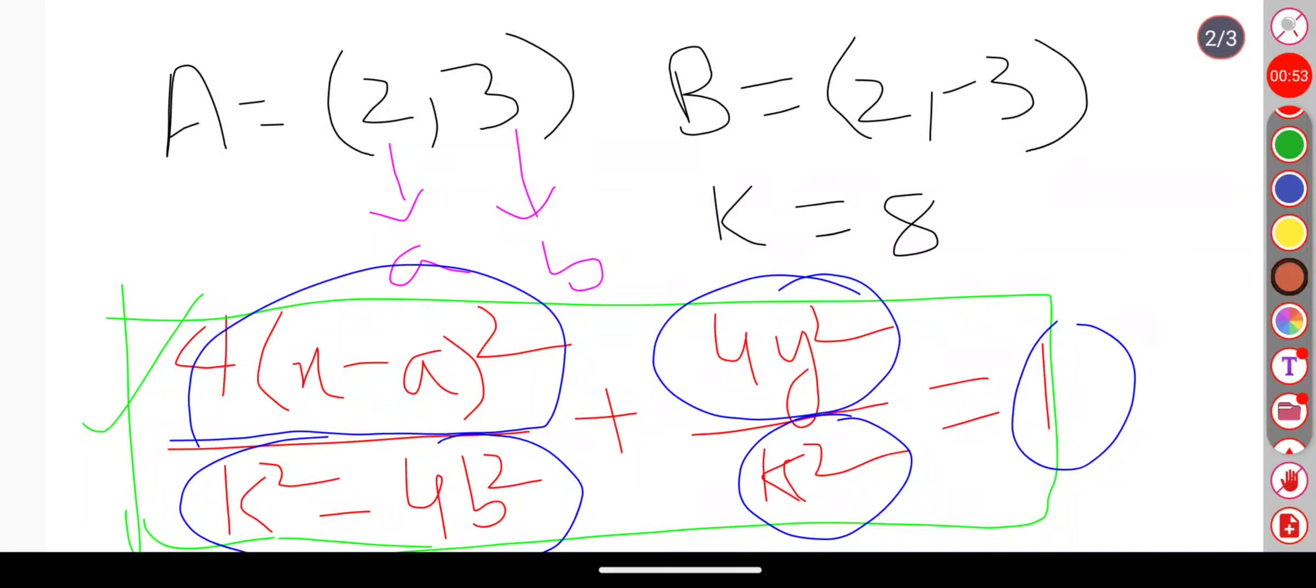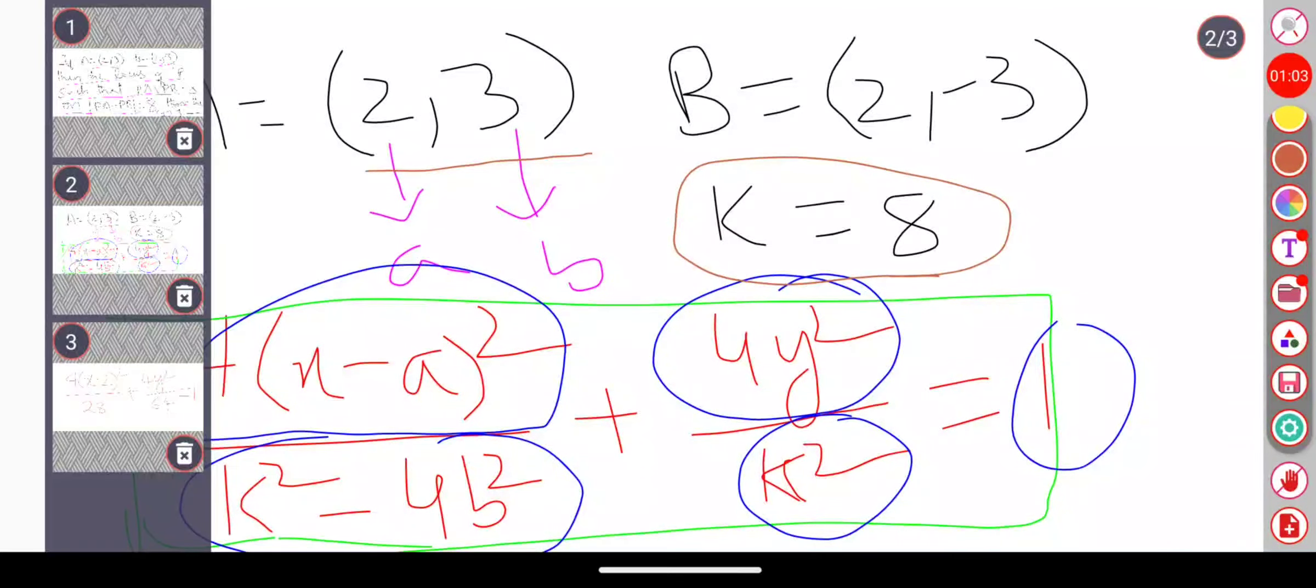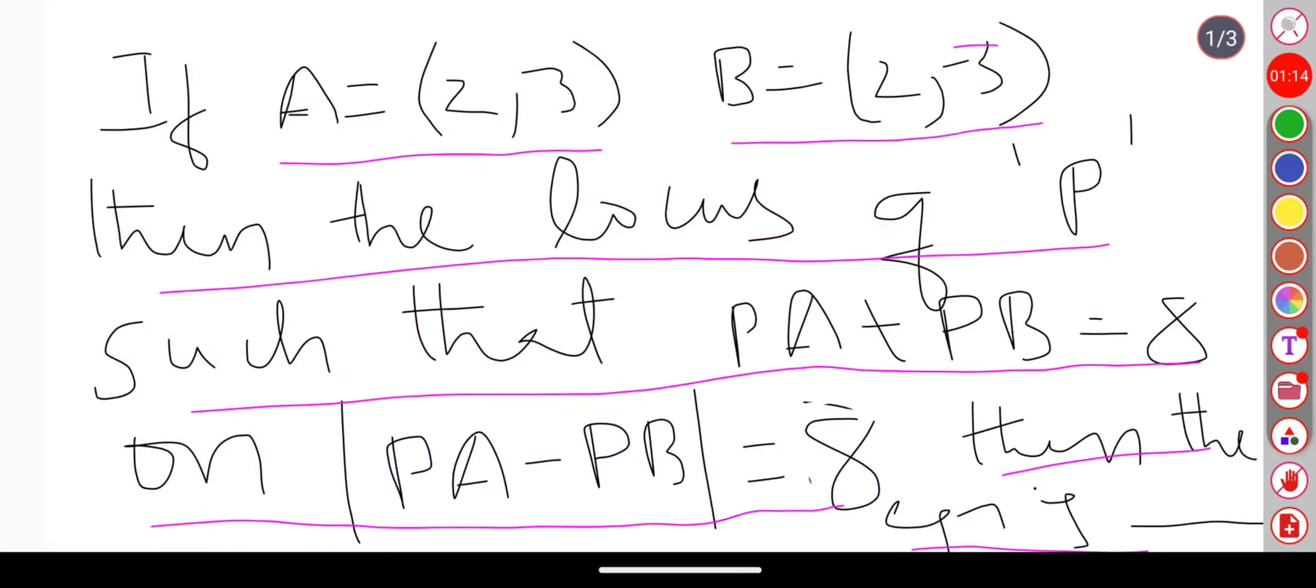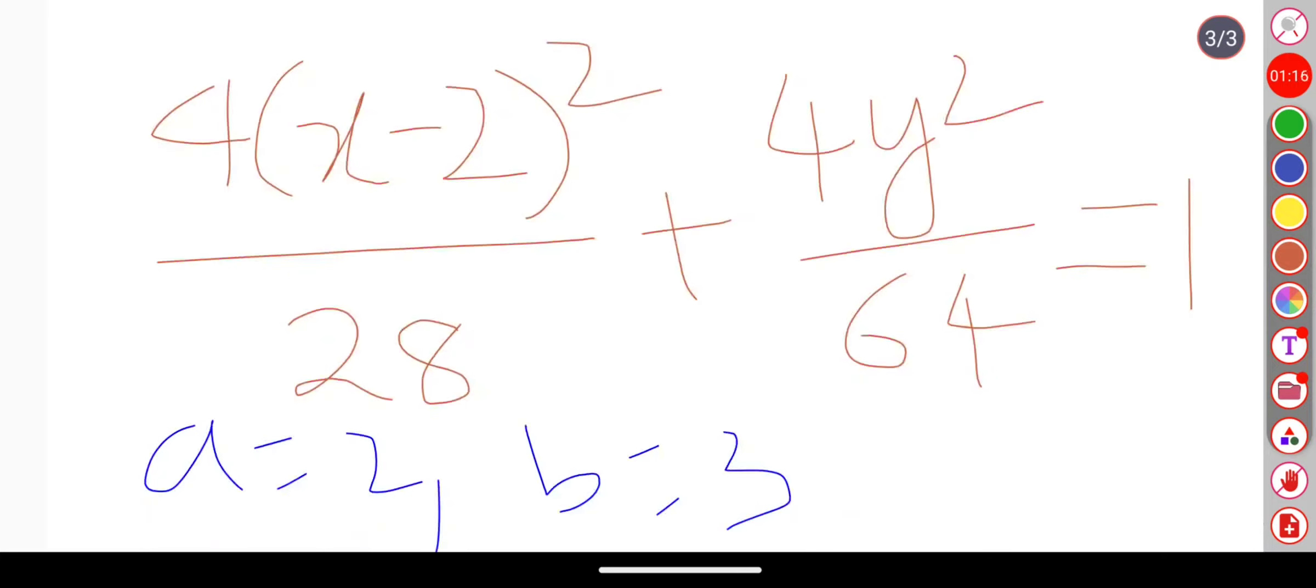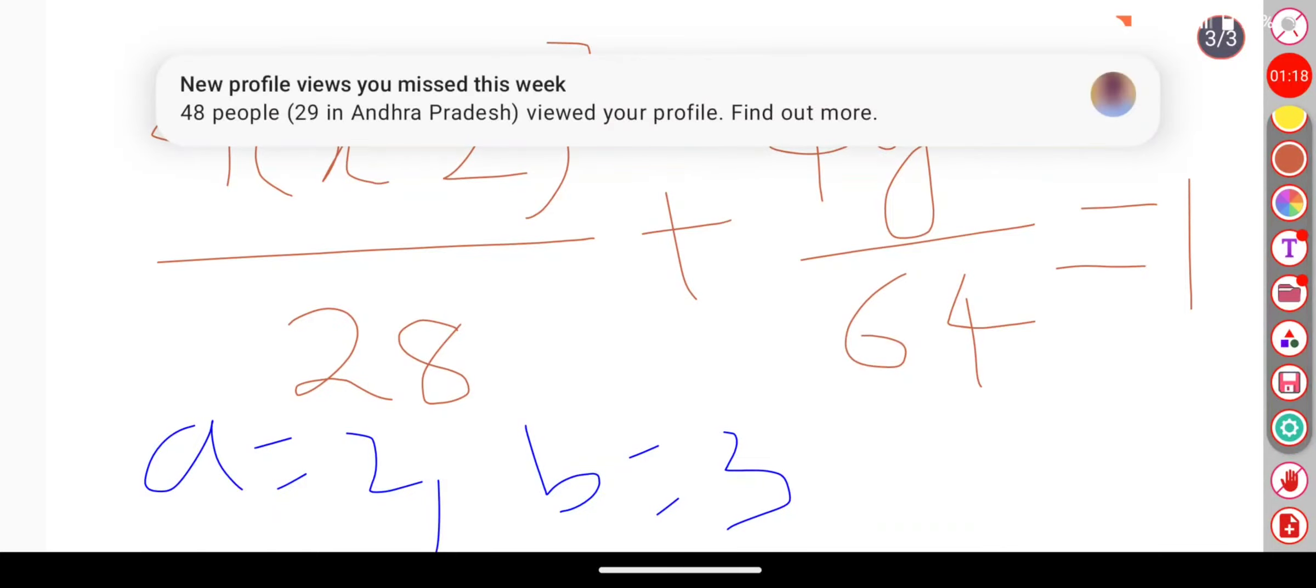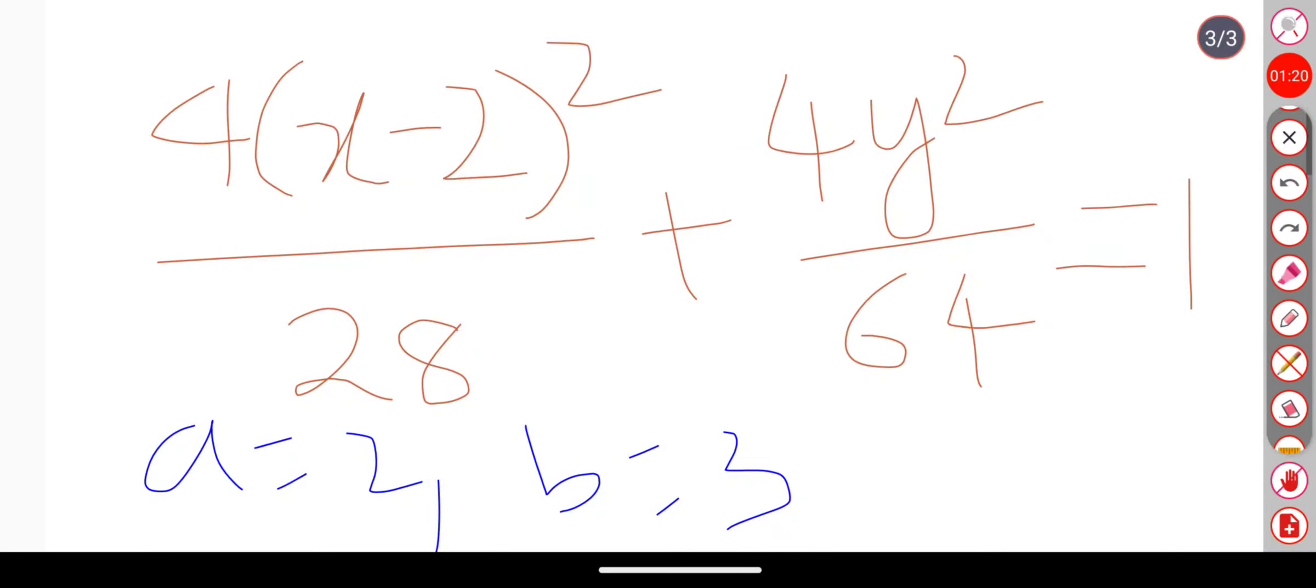In the question, he has given a comma b value, that is 2 comma 3, and he has given k value. So we can say that the a value given in the question is 2 and b value is 3. Both a and b values we have to substitute in the equation.